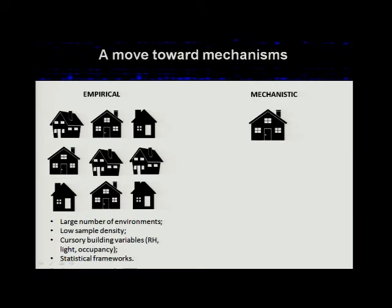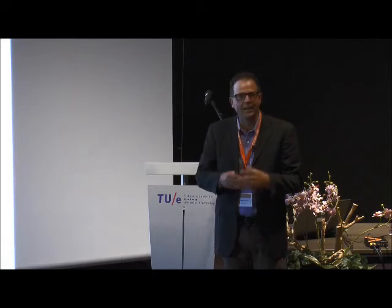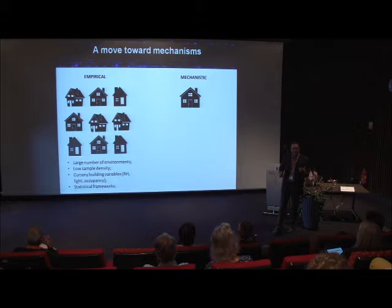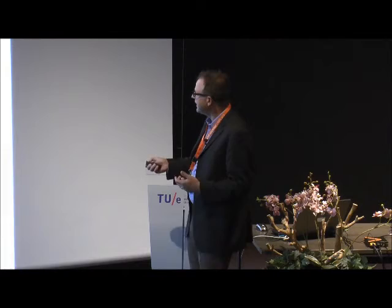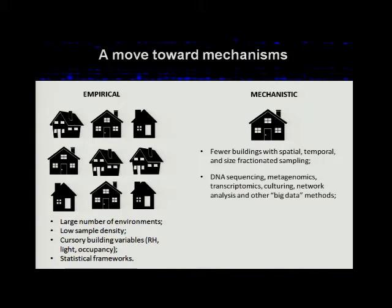Moving from more empirical to a more mechanistic approach: previously the focus has been on looking at lots of buildings, which forces us to do low numbers of samples per environment, low sample density, cursory building variables — ones that can be measured easily like relative humidity, light, and occupancy — and then use statistical frameworks to work things out. That's useful to generate hypotheses. But we need a more mechanistic understanding of buildings and building-microbe interactions. To get that, we need studies where we look at fewer buildings but have a real spatial, temporal, and size-fractionating sampling regime. We need to continue DNA sequencing, but metagenomics and transcriptomics are also important if we want to understand what the microbes are actually doing — especially growth and pathogens — metatranscriptomics as well.